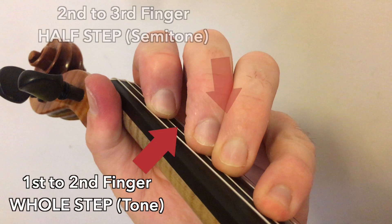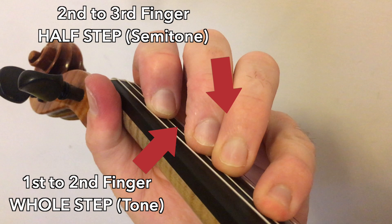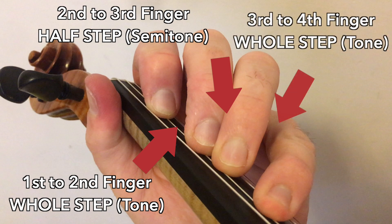The second and third finger are close together, so that's just a half step gap or a semitone. And then between the third and the fourth finger, a whole step gap again. That's a tone.